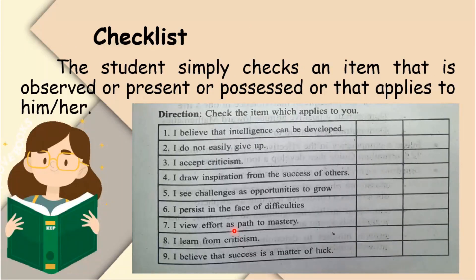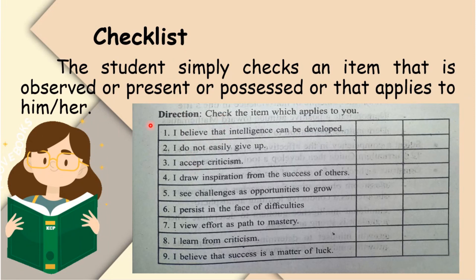A checklist — as the name implies — has the student simply check an item that is observed, present, possessed, or that applies to them. For example, the student is asked to evaluate the extent to which he or she possesses a growth mindset. The direction reads: 'Check the item which applies to you.' Number one: 'I believe that intelligence can be developed' — place a mark if you believe that, and leave it blank if not.